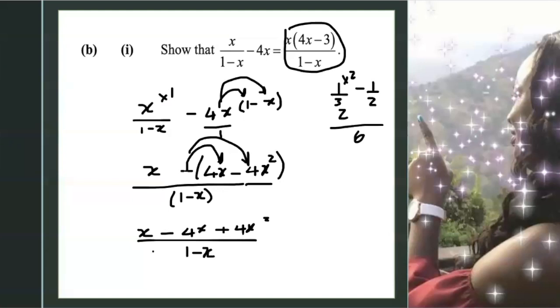Now x minus 4x, we can reduce that. So x minus 4x, that's minus 3x plus 4x² all over 1 minus x. Now please know that x is the same thing as 1x. So 1 minus 4, that gives us a negative 3, then we rewrite the x. Now remember it's a proof. We're trying to prove the above right here. So the first thing I'm going to do is rewrite where I'm going to have the 4x² first and the minus 3x second. So I have 4x² minus 3x all over 1 minus x.